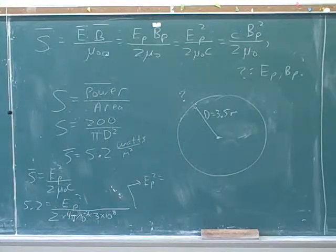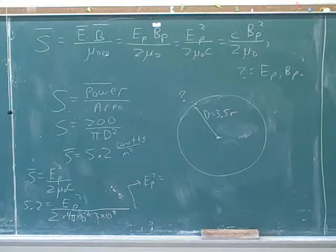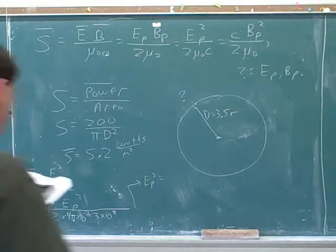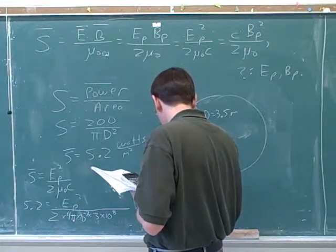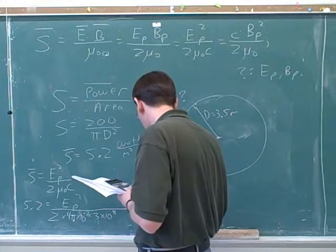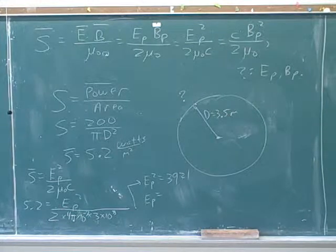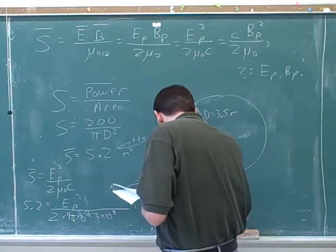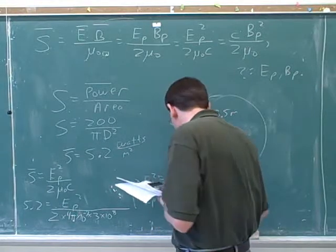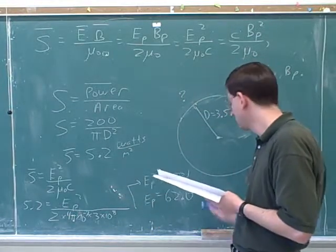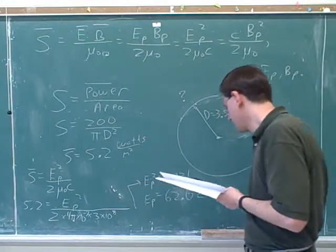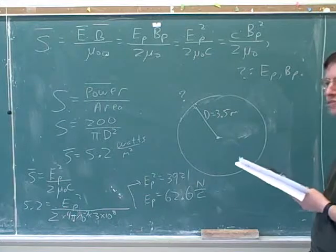The answer should be bigger than before, not smaller. That looks good — let's just call that 3921. So we're just rounding off to what feels good. Do you remember what the units are for electric field? Newtons per coulomb. Very good. So the electric field is 62.6 newtons per coulomb.